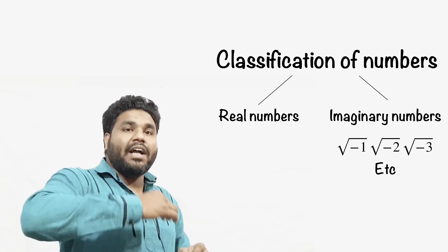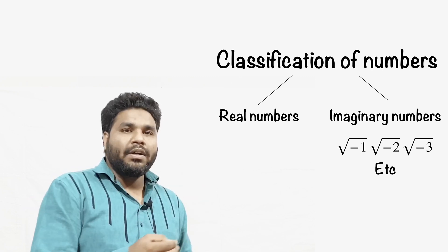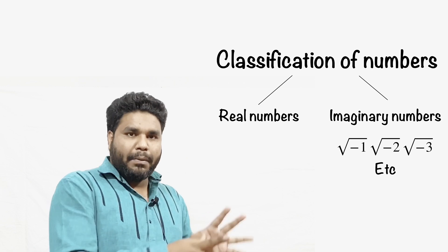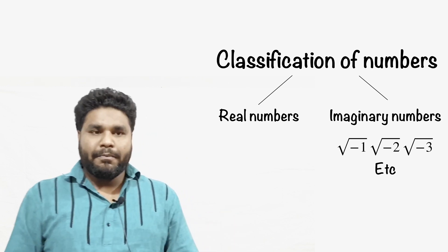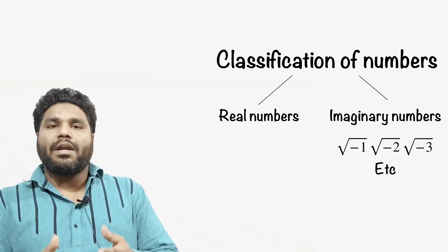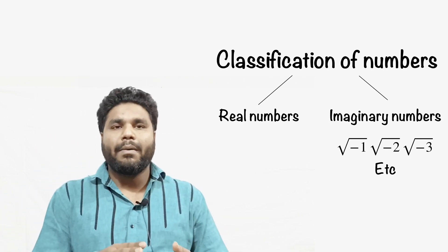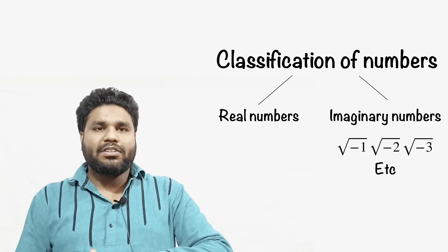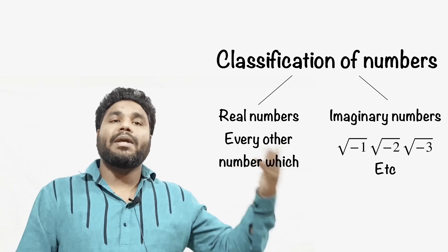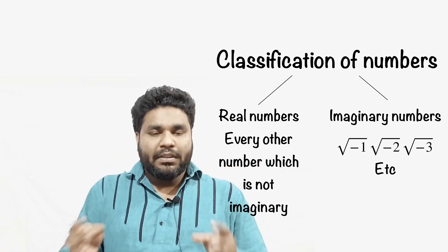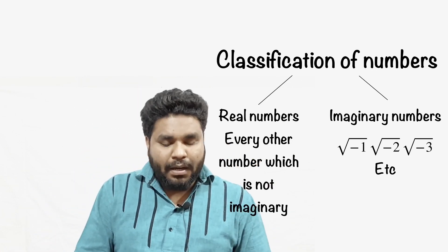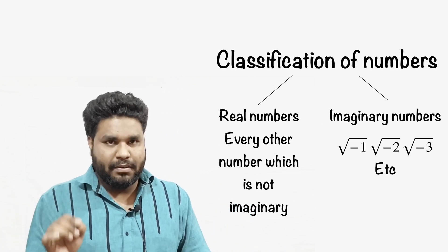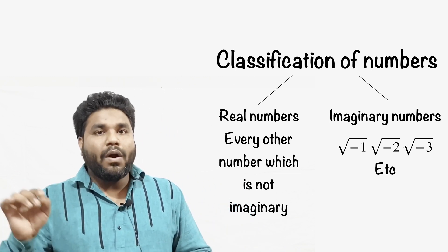The rest of the numbers — any decimal number or any other number that is not imaginary — are called real numbers. The definition of a real number is: a number which can be represented on a number line is called a real number.